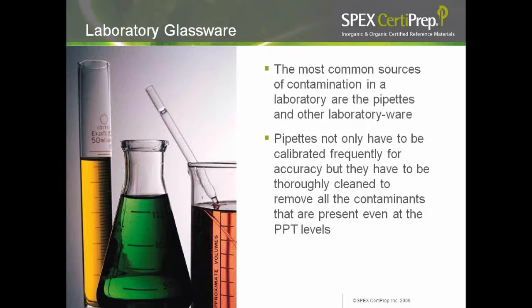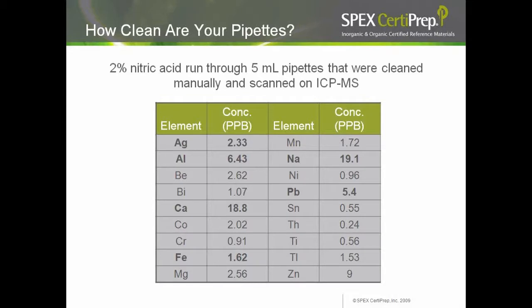So far we have examined contaminants that could come from water and acids. The other major source of contamination is pipettes and general labware. As good laboratory practice, pipettes must be calibrated and thoroughly cleaned, with cleaning procedures ensuring freedom from contaminants even at PPT levels. Pipettes have a memory effect — remnants of what you pipetted before show up in later use even after thorough cleaning. To demonstrate the effect of manual cleaning, we scanned a 2% high-pure nitric acid for impurities after delivering it through a thoroughly but manually cleaned pipette.